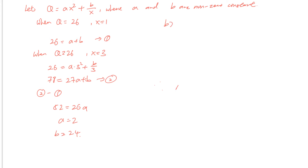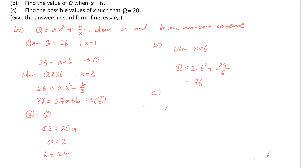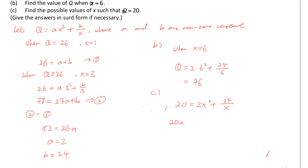Part b: Q equals 2 times 6 squared plus 24 over 6, so it equals 76. Part c: find the possible values of x such that Q equals 20. Well, Q equals 20: 20 equals 2x squared plus 24 over x. How can we find the possible values of x? You need to change the form — multiply x first. 20x equals 2x cubed plus 24.